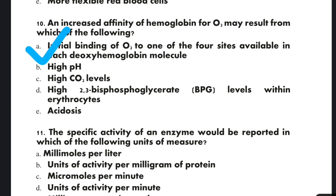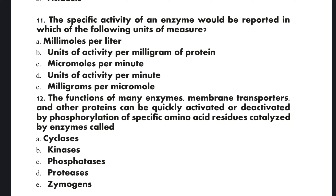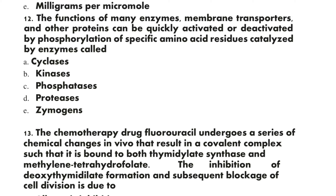Question 11: The specific activity of an enzyme would be reported in which of the following units of measure? A: millimoles per liter, B: units of activity per milligram of protein, C: micromoles per minute, D: units of activity per minute, E: milligrams per micromole. The correct option is B: units of activity per milligram of protein.